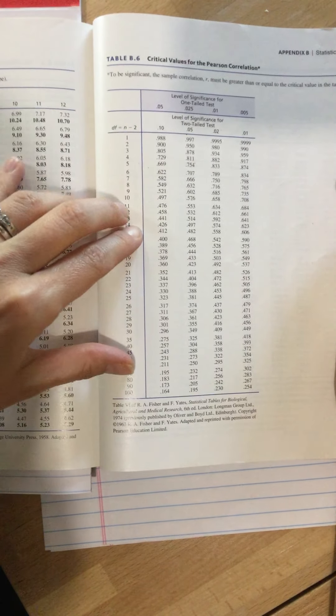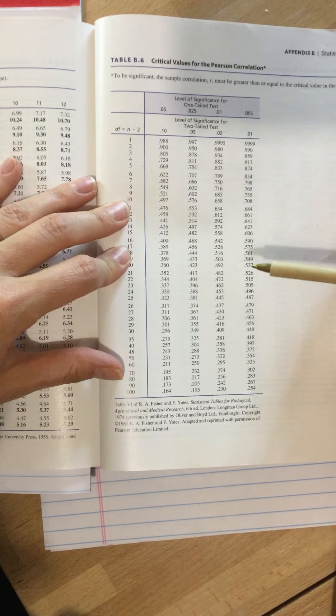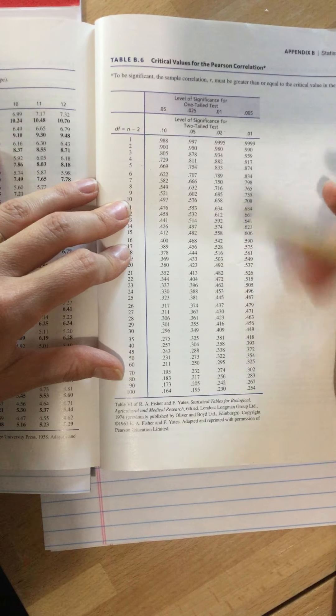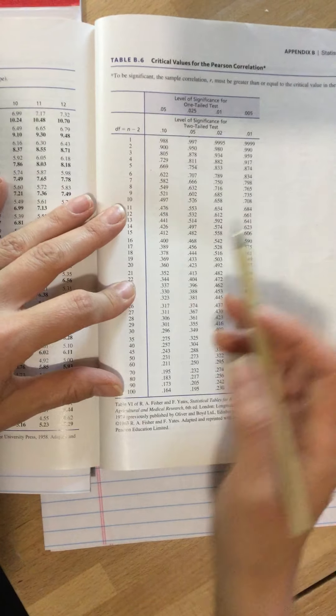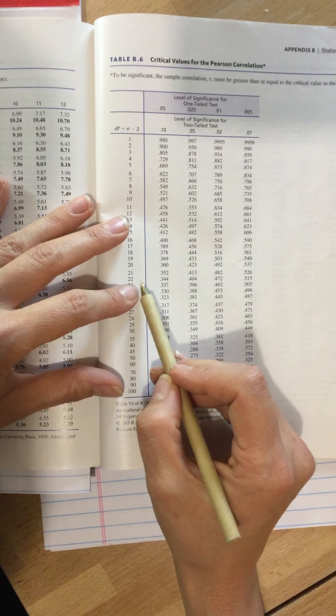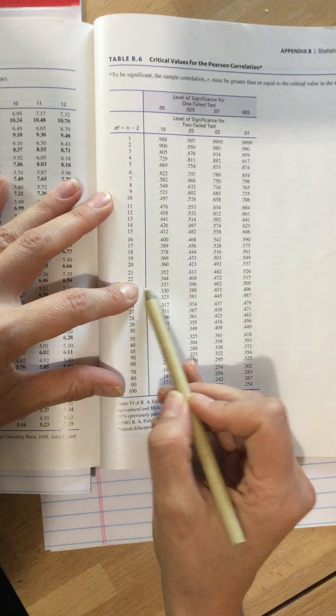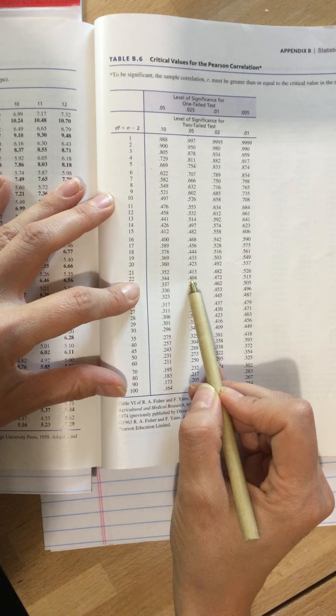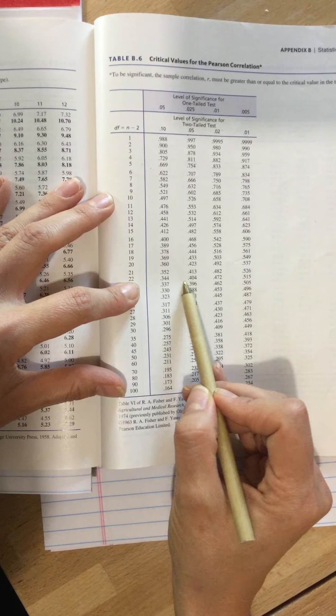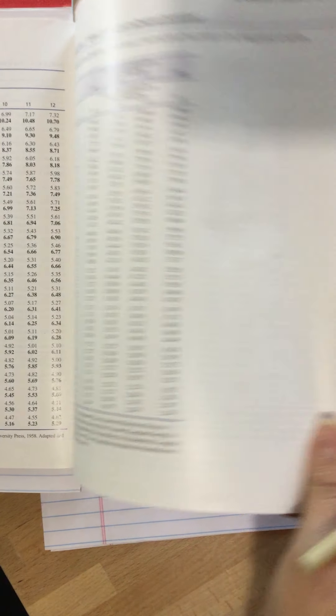And we only have the plus or minus because it's a two-tailed test. If it was a one-tailed test, then it wouldn't be plus or minus. It would be plus or minus one of them, not both of them. So if we look here, degrees of freedom 22, our alpha is still 0.05 with a two-tailed test. So now the critical value is 0.404.